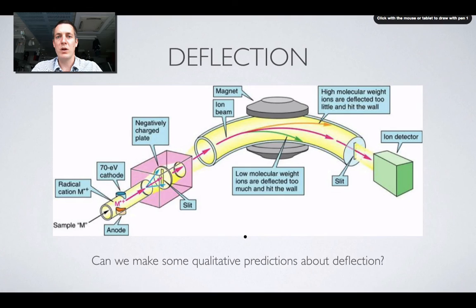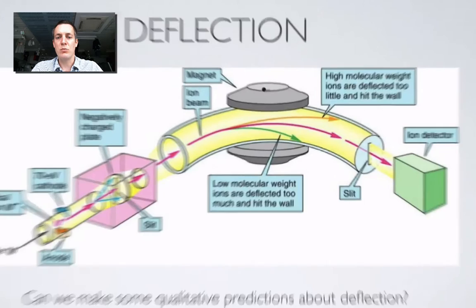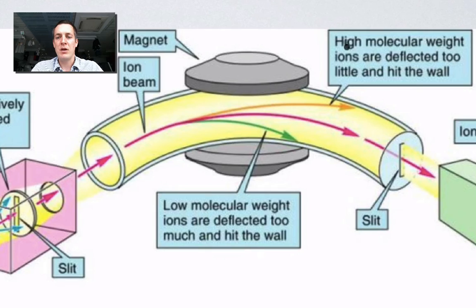But some of them will get bent more than others, and we're asking the question here, can we make some qualitative predictions, so without any numbers involved, about which ions will get deflected most? So, which ions will be most affected by this magnetic field?